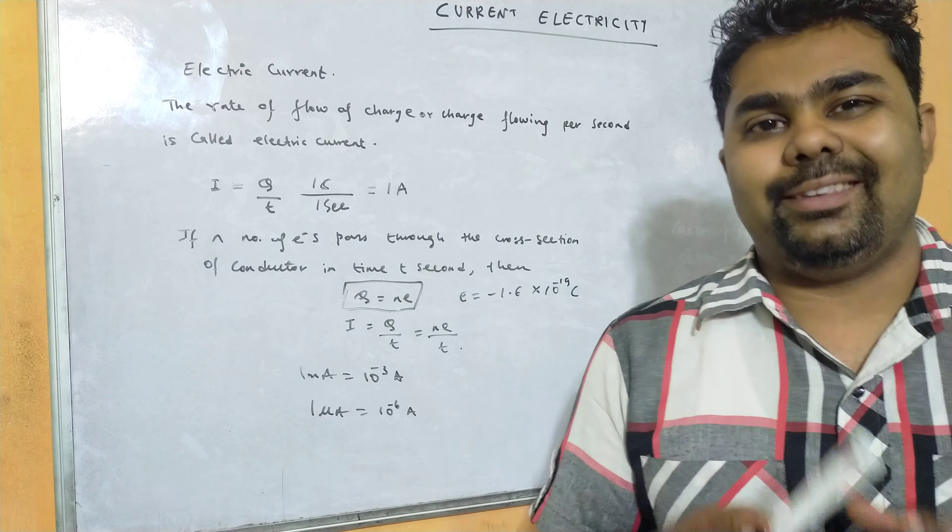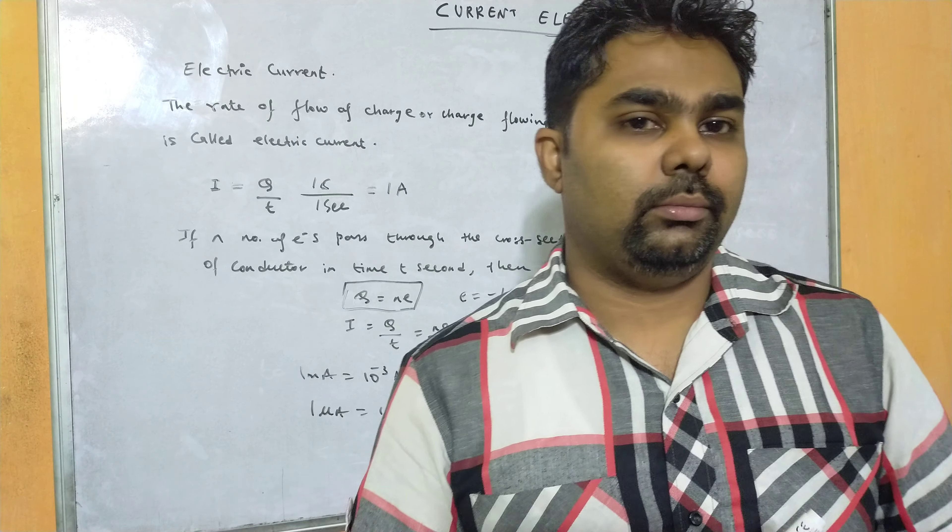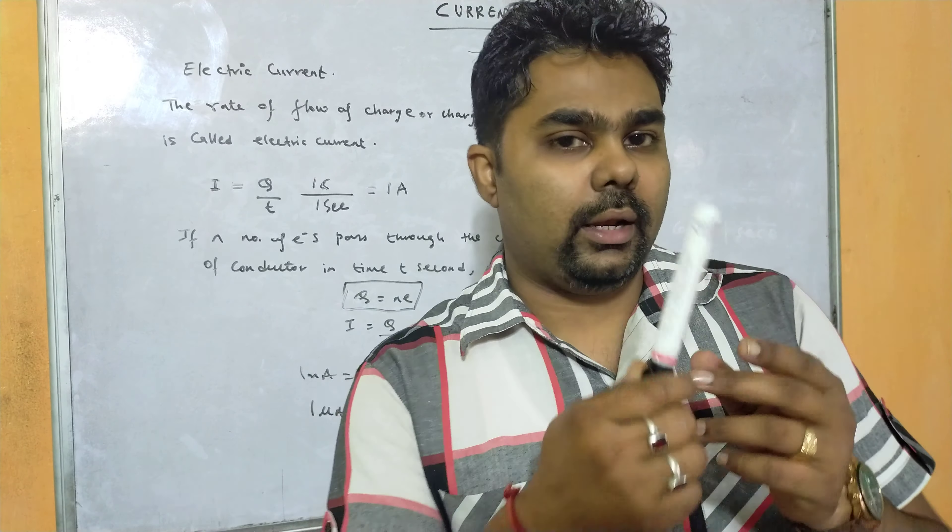What is conservation of charge? Charges cannot be created and cannot be destroyed; they get transferred from one body to another. The total number of charges remains the same. For example, when you rub a glass rod in your hair, the glass rod develops positive charge and your hair develops negative charge — equal and opposite charges get transferred. This is conservation of charge.